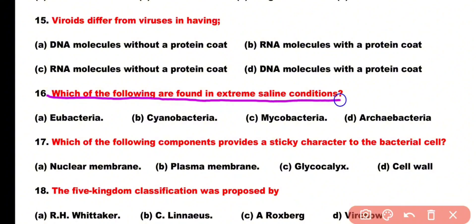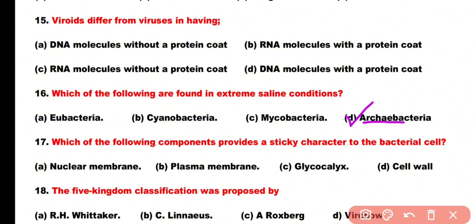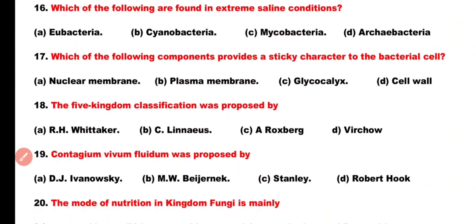Question number 16: Which of the following are found in extreme saline conditions? Options: eubacteria, cyanobacteria, mycobacteria, archaeabacteria. Correct answer is option D. Archaeabacteria can survive in extreme saline conditions.